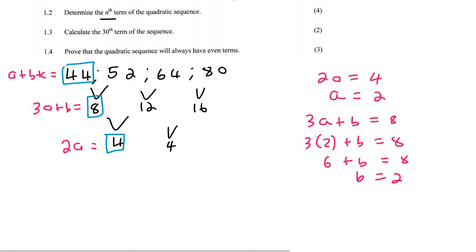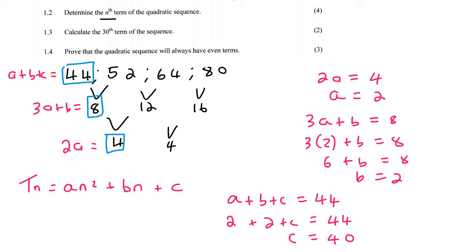And then lastly, you go to the third level, or the top level. a plus b plus c is equal to 44, and you fill in the a, you fill in the b, and then if you work out c, you would find that it will be equal to 40. We'll still double check it now, but we must remember that the general formula of a quadratic goes like this. And so we have just found a as 2, b as 2, and c as 40.